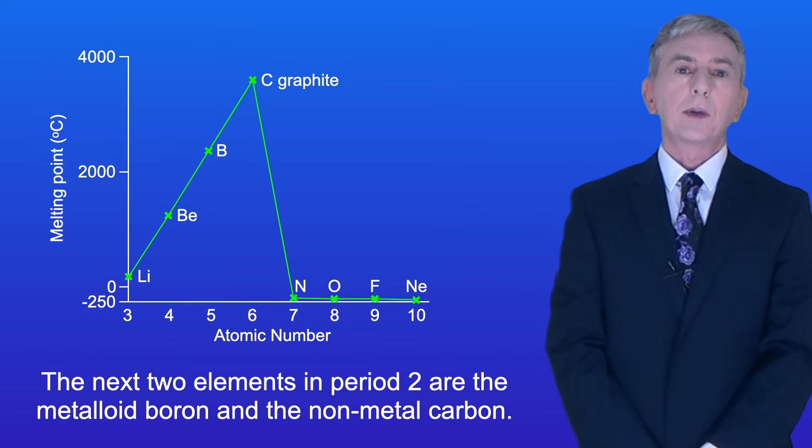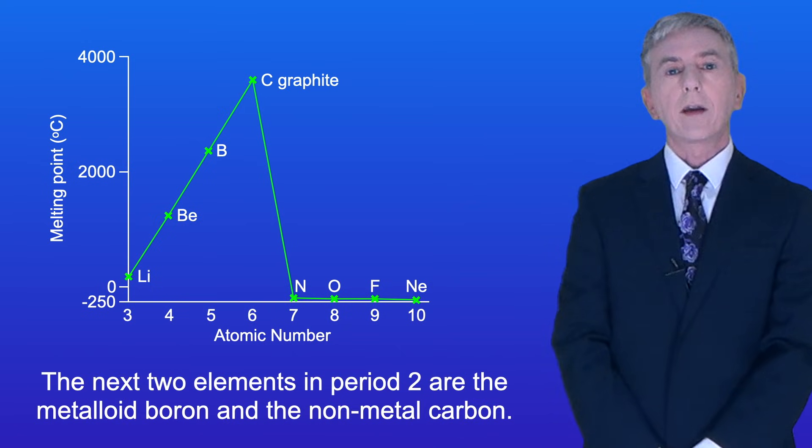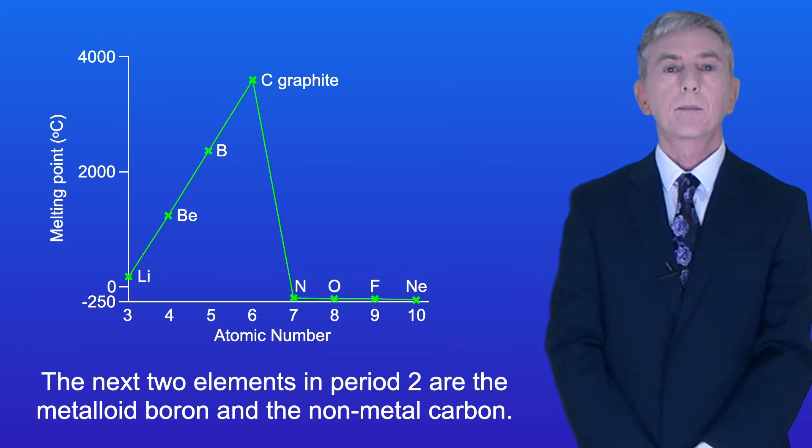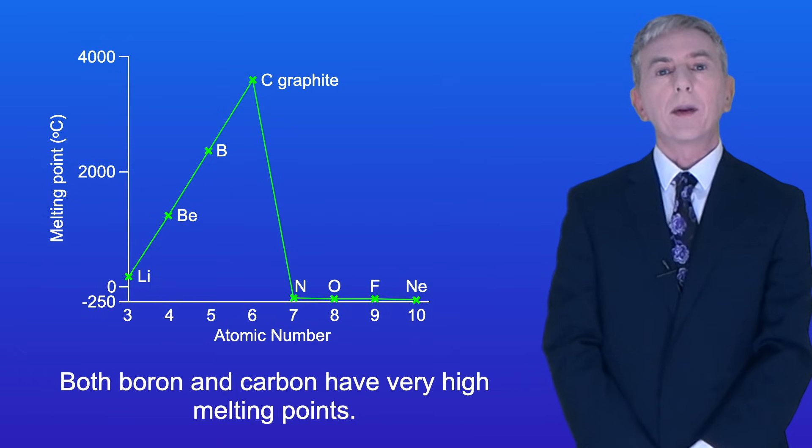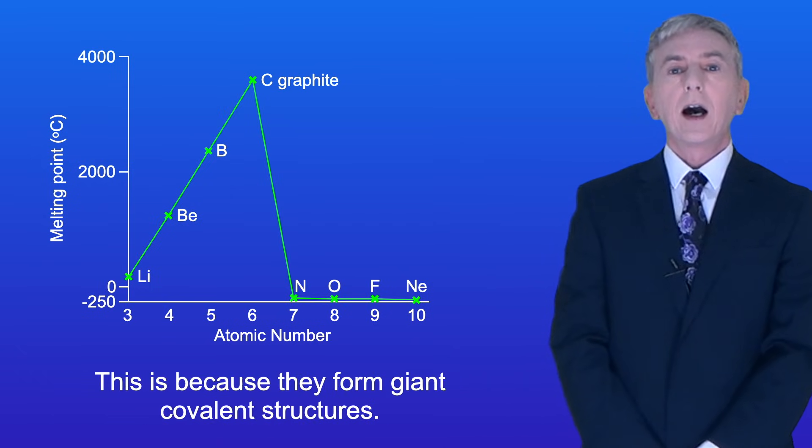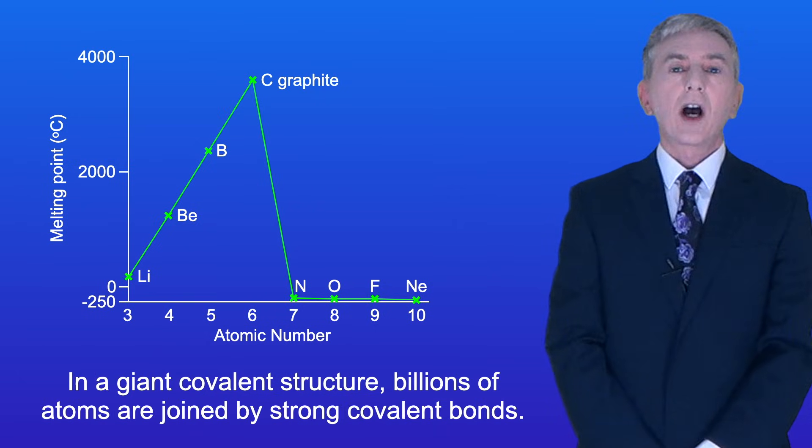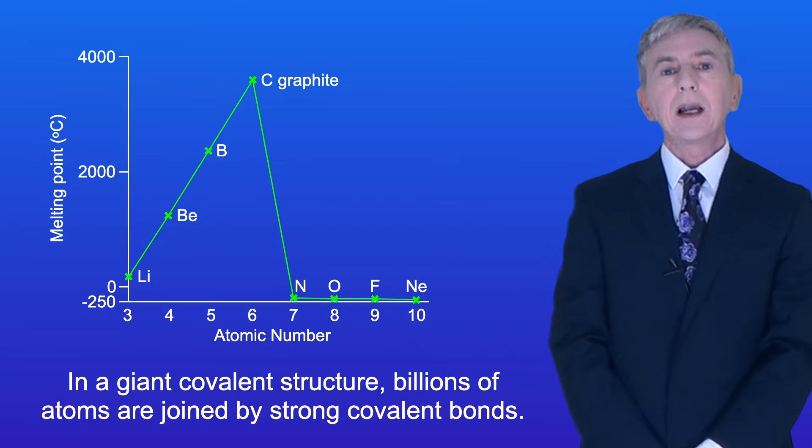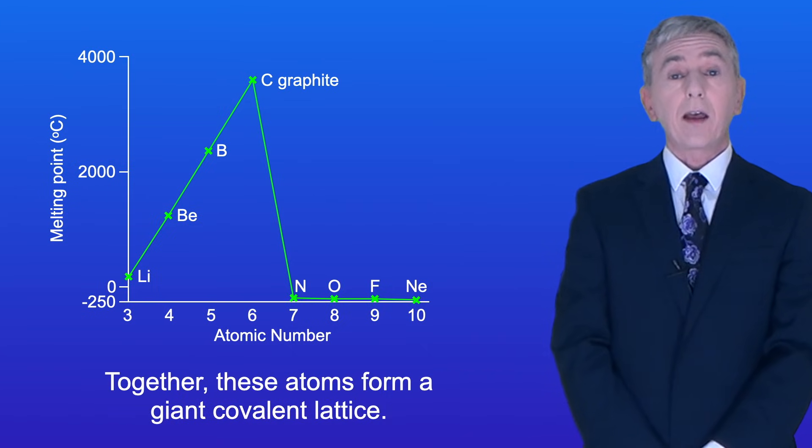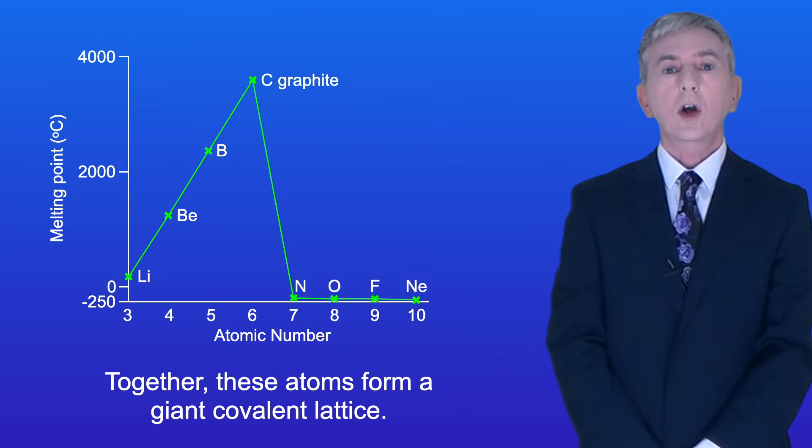The next two elements in Period 2 are the metalloid boron and the non-metal carbon. Both boron and carbon have very high melting points and this is because they form giant covalent structures. In a giant covalent structure billions of atoms are joined by strong covalent bonds and together these atoms form a giant covalent lattice.